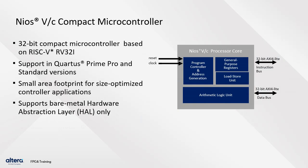The NEOs 5C compact microcontroller supports a non-pipeline datapath and has a small area footprint for size-optimized controller applications. Its functional units, as described in the block diagram, include an arithmetic logic unit, general-purpose registers, an ECC module, and instruction and data buses.